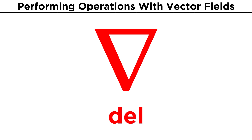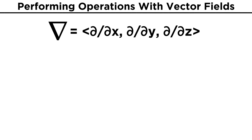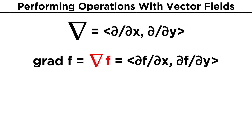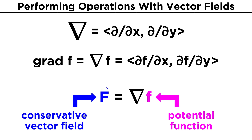Now let's bring back the del operator we introduced in the previous tutorial regarding gradient. Recall that del is a vector made of the differential operators d/dx, d/dy, or if in three dimensions, d/dx, d/dy, d/dz. The gradient of some function f, del f, is itself a vector field with components being the partial derivatives of the function: df/dx, df/dy. If we have a vector field F and it can be written as the gradient of a function f, the vector field is called a conservative vector field, and the function f is called a potential function for the vector field F.